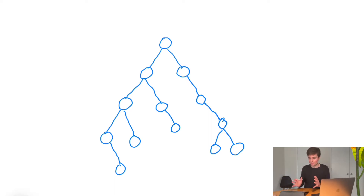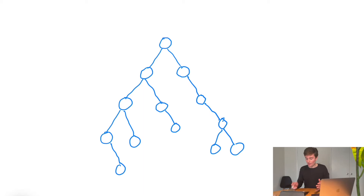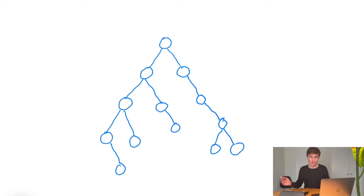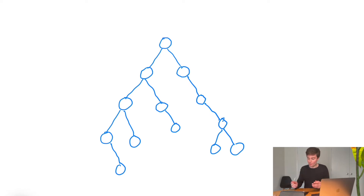I'm going to start this off visually, walk through what needs to happen, and then put it into code. Here we have an example of a binary tree. Every single node has no more than two children, and there is one single parent node that we're going to call the head. The nodes each have a pointer that points to the left node and the right node, and we're going to call these the previous node and the next node.